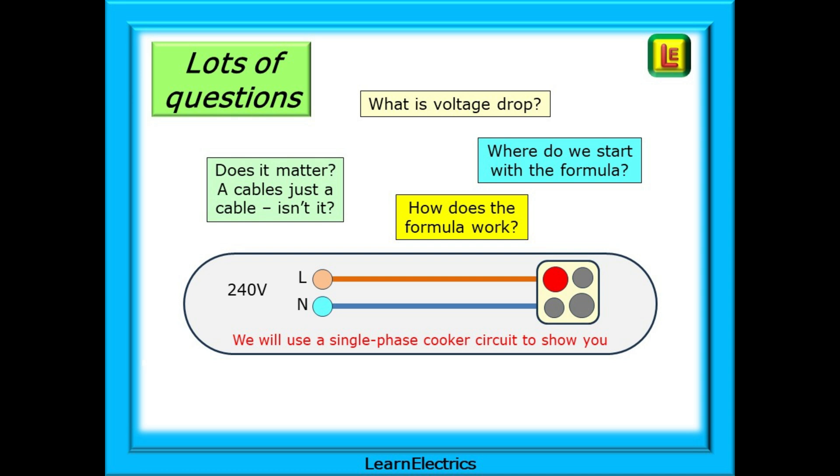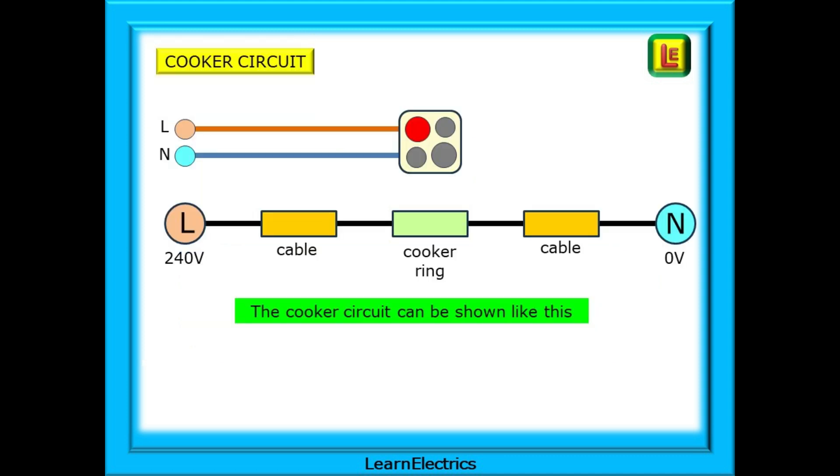A cable is just a cable, isn't it? We will use a basic cooker circuit to show you voltage drop and its effects on the circuit. The cooker here has a line from the consumer unit to the cooker, and a return path along the neutral. There will also be an earth or CPC, but we do not take this into account for voltage drop calculations.